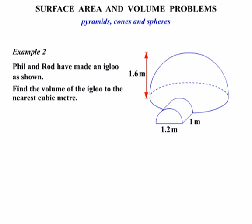Alright, let's look at Phil and Rod's igloo. Once again, we can see there's two separate sections. This part here, which is like a half sphere or a hemisphere. And then we've got this entryway here, which is a half cylinder or hemicylinder.